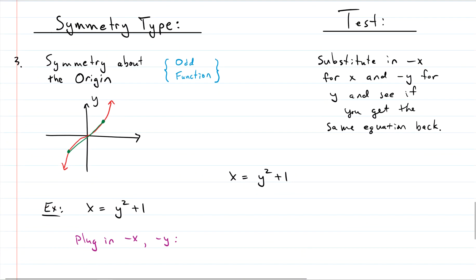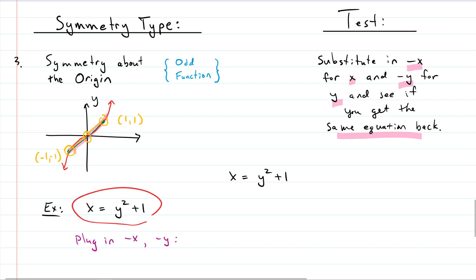For symmetry about the origin, the origin is at (0, 0). If a point at (1, 1) is on the curve, there should be a corresponding point at negative one, negative one, and a line through both points should pass through the origin. The test is to substitute negative x for x and negative y for y simultaneously, then simplify and see if you get the same equation back. Our original equation is x equals y squared plus one.